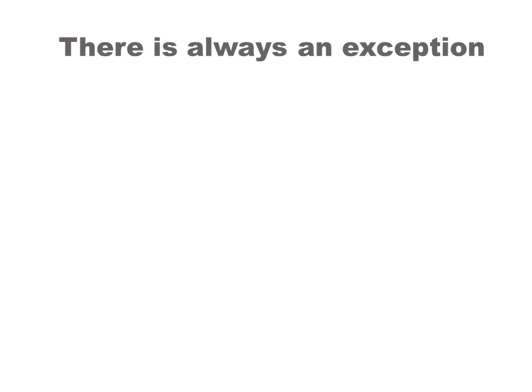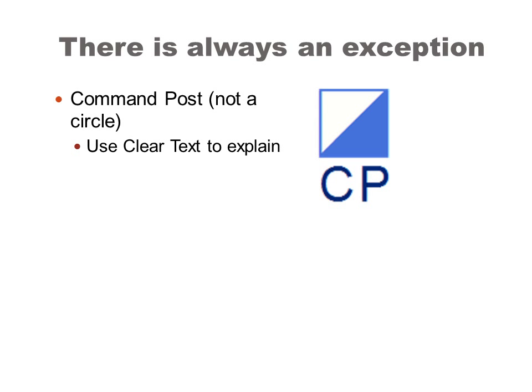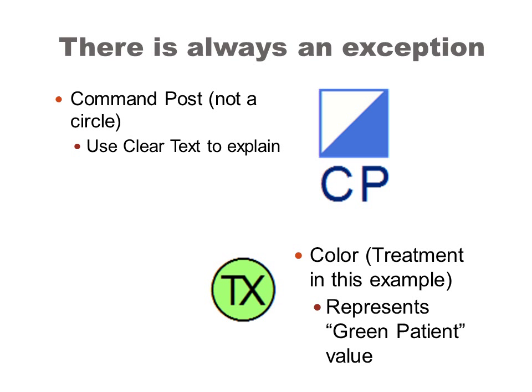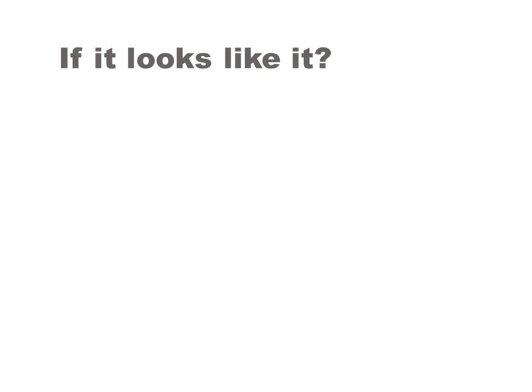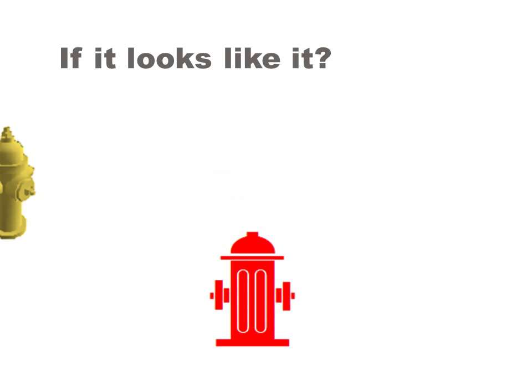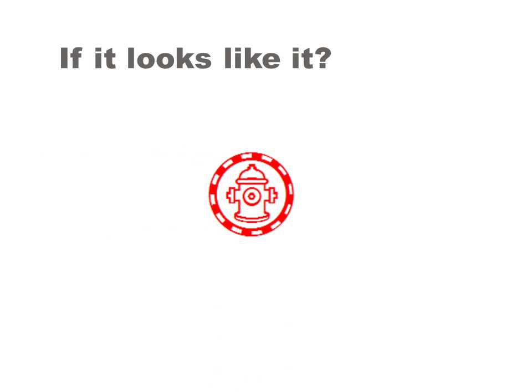There is always an exception to the rule. For example, a command post, which is not a circle, is a square noted by a blue and white triangle. It is recommended to use clear text at the bottom of the symbol to make the meaning more understandable. Color can also be used — such as a treatment area where a green patient should go. Another exception is if the symbol looks like the feature it represents, such as a fire hydrant, in which case it is illogical to reject that symbol.